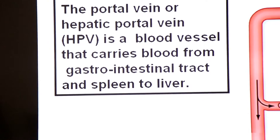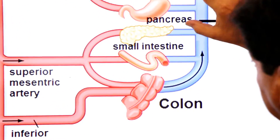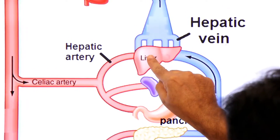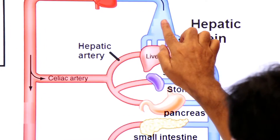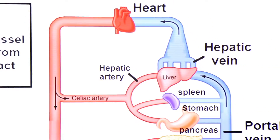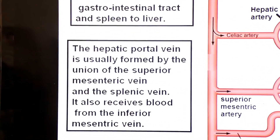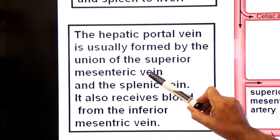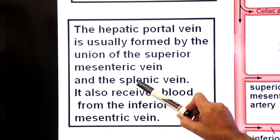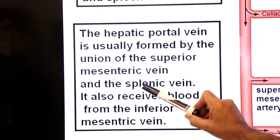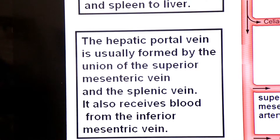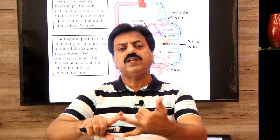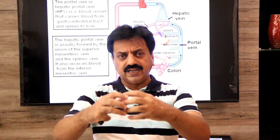The hepatic portal vein is formed by the union of several veins. It is formed by the union of the superior mesenteric vein, which returns blood from the small intestine, and the splenic vein. It also receives blood from the inferior mesenteric vein, which returns blood from the large intestine. These three veins — superior mesenteric, inferior mesenteric, and splenic — unite to form the hepatic portal vein.